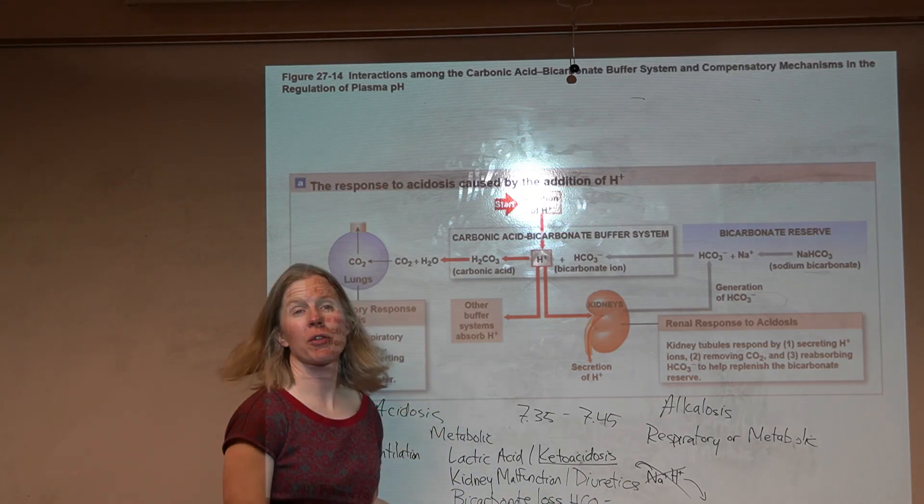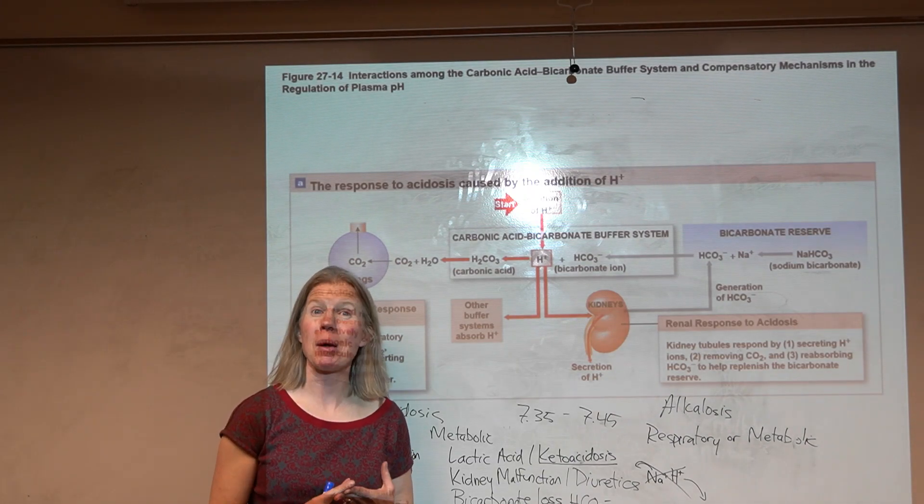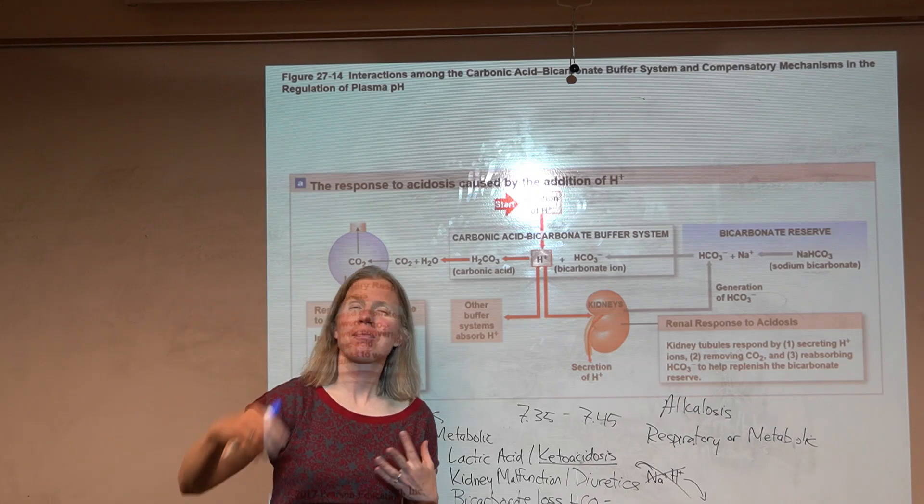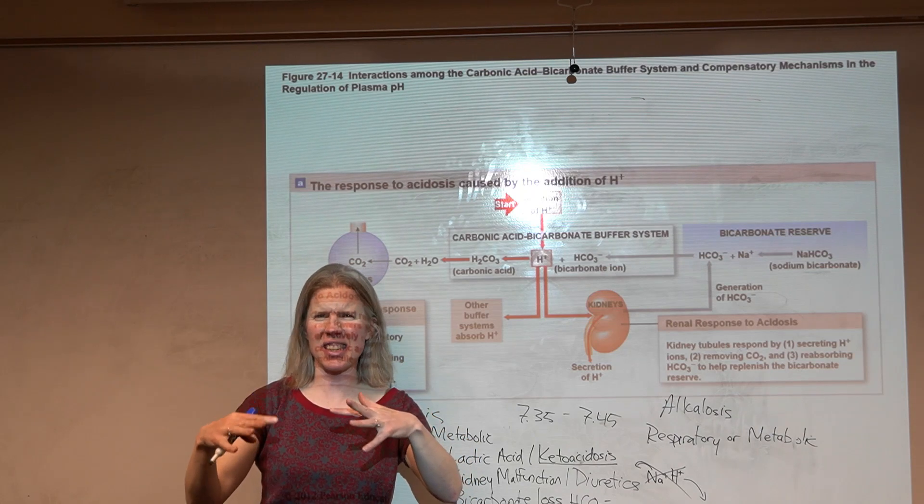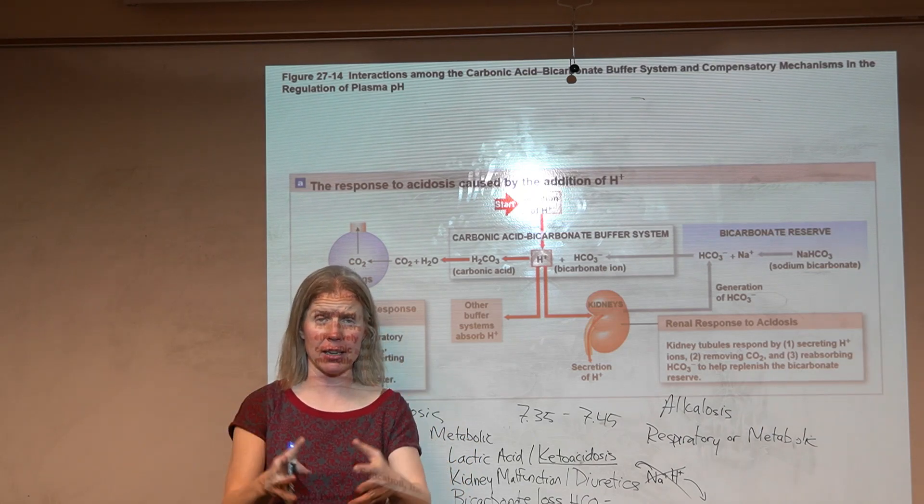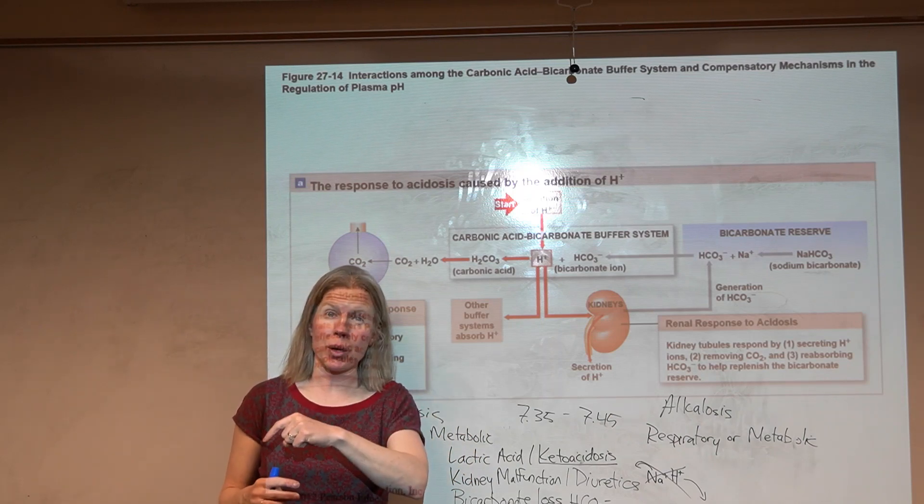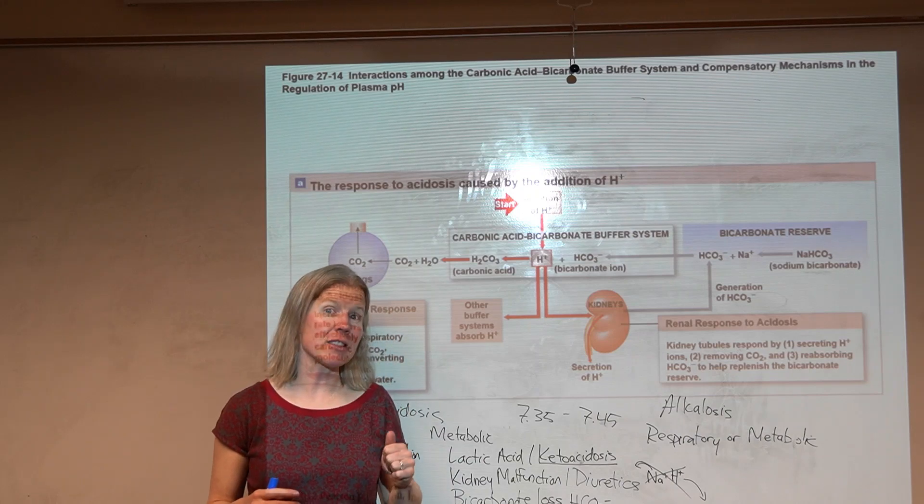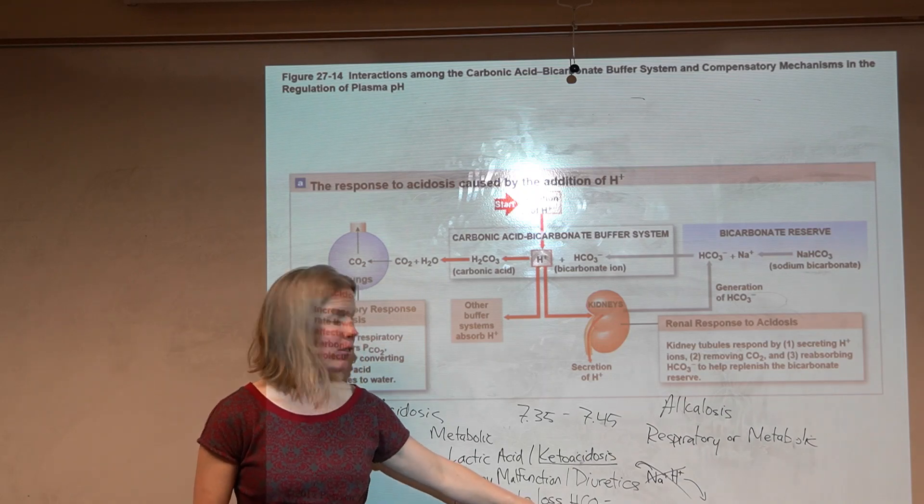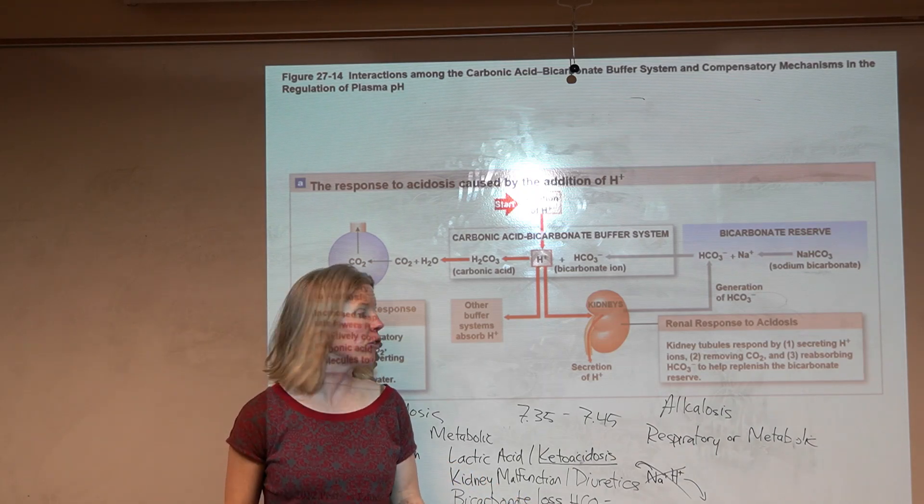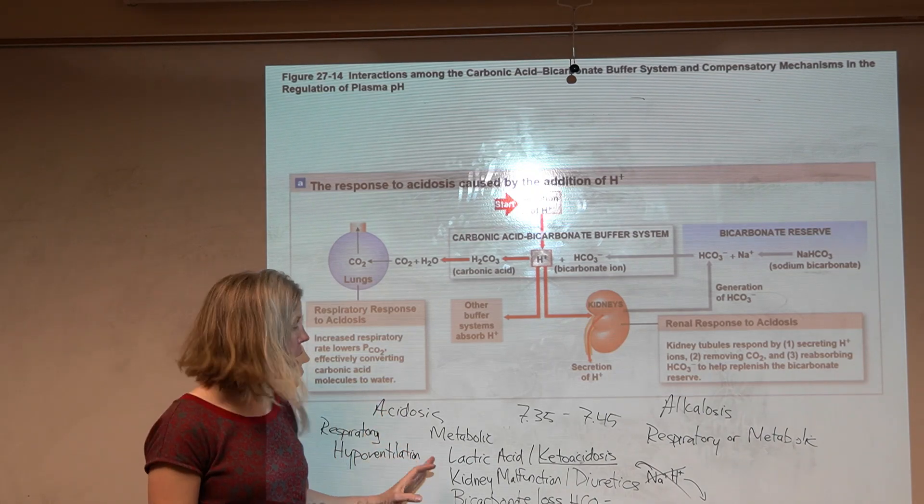Last but not least, bicarbonate loss. This is going to be the result of something like diarrhea. The pancreas is producing that alkaline buffer that's trying to decrease the acidity of the chyme coming from the stomach into the small intestine. We're putting bicarbonate into the GI tract. Normally that gets reabsorbed, but in cases of diarrhea where you're just losing that fecal matter so quickly, you could have loss after loss of bicarbonate.